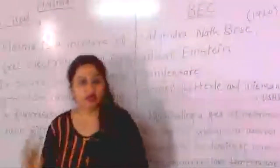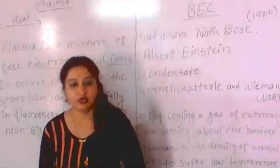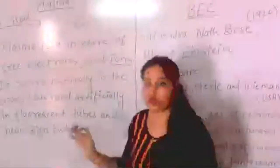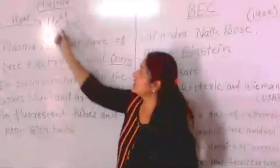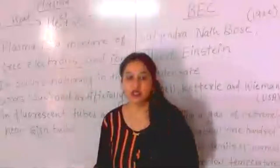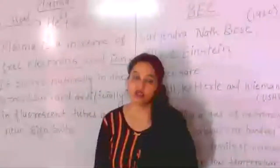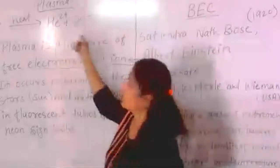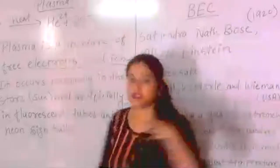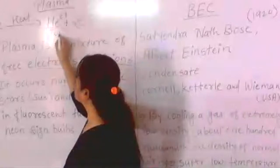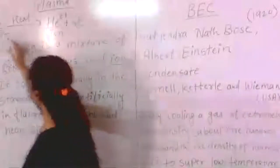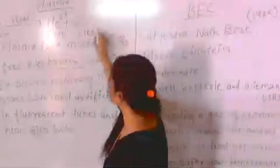An atom has three things: electron, proton, and neutron. Now helium has two electrons. If an electron is lost from the atom, the remaining atom becomes a plus charge, and the lost electron carries a minus charge. In helium we have two electrons; when one electron is lost, the atom becomes a positive ion.